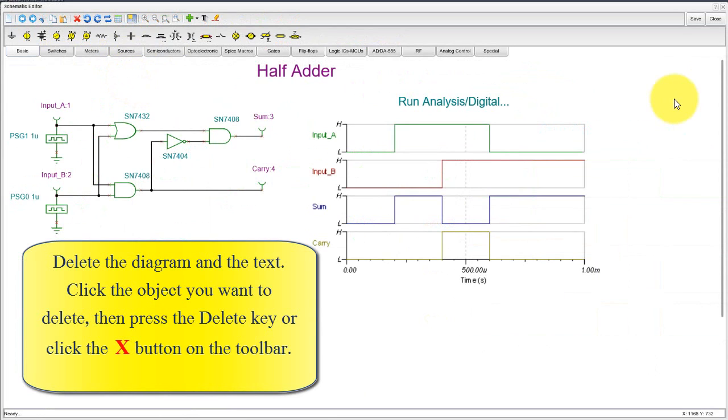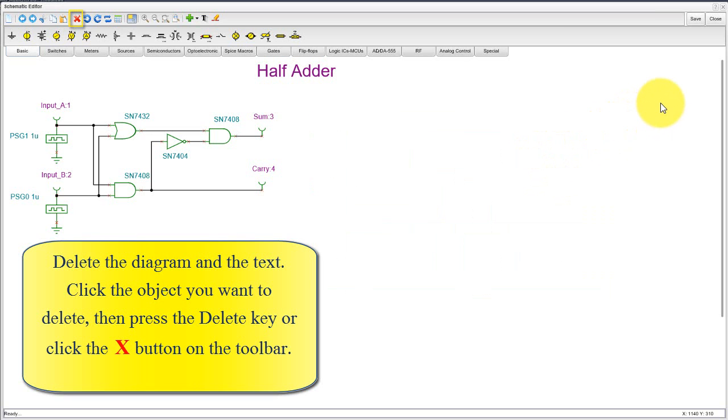Delete the diagram and the text. Click the object you want to delete, then press the Delete key or click the red X button on the toolbar.